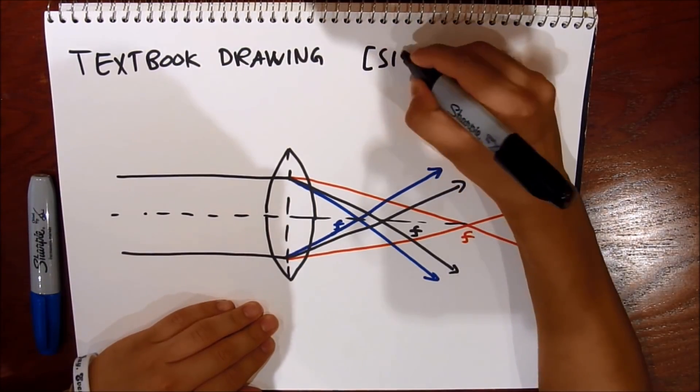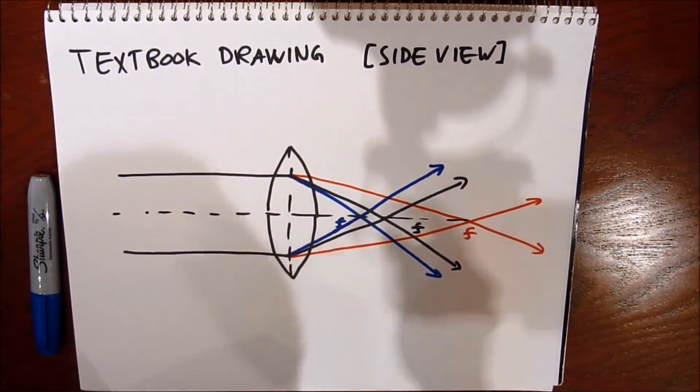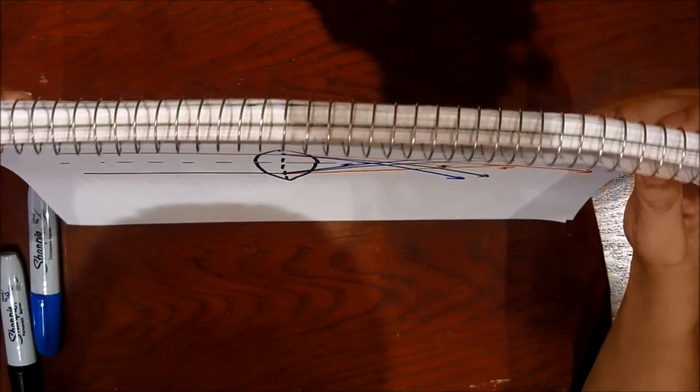But what I think is kind of weird is that this is a side view of what's going on. It's like a cross sectional. But I don't think that's how it should be displayed. And I think it makes more sense to use a bird's eye view.